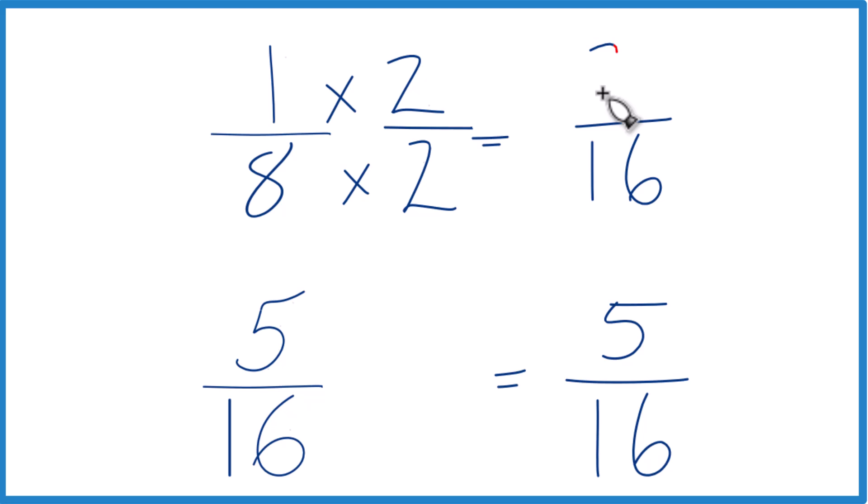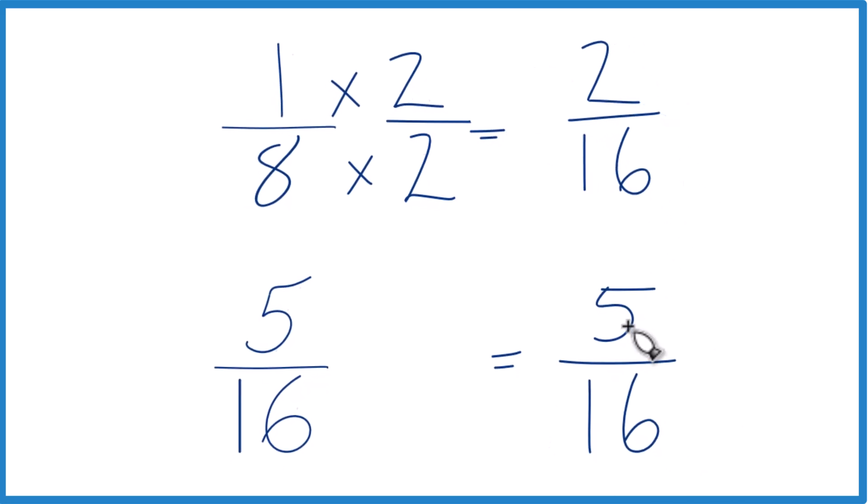1 times 2 is 2, and now we can make our comparison, because we have the same denominator. 5 is greater than 2, so 5 sixteenths, that's greater than 2 sixteenths.